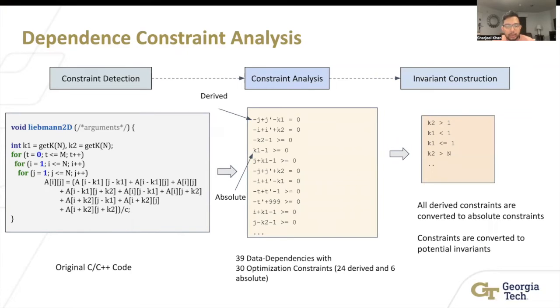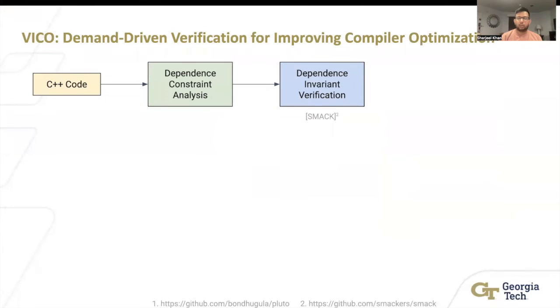After you get all of these derived ones, we can make them absolute by transforming them. And you get more simpler constraints, which we can actually make into invariants by flipping the operators. So like k2 minus 1 less than n.